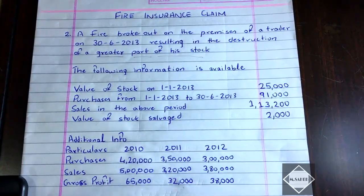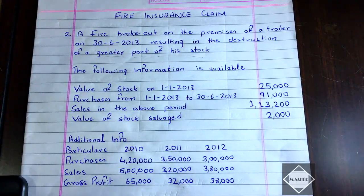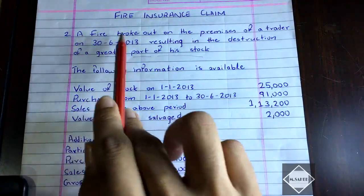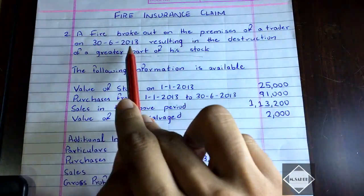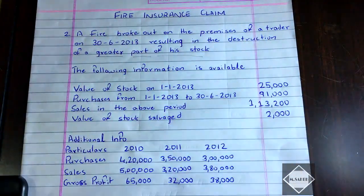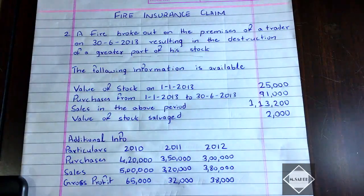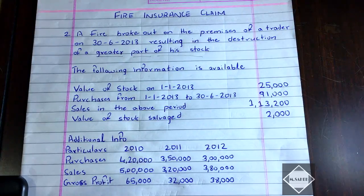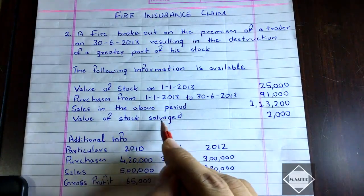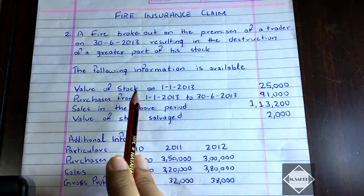In this video we are going to solve one more problem. A fire broke out on the premises of a trader on 3/6/2013, resulting in the destruction of a greater part of the stock. Greater part of the stock means the entire stock was not destroyed — there was some amount of stock that was saved from the fire, that is, salvaged.